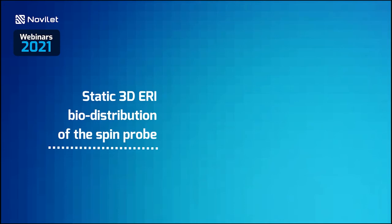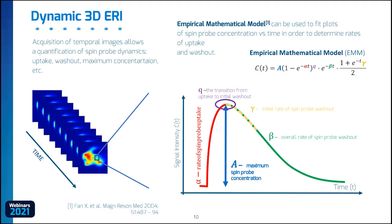Static images can provide very interesting information about spin probe bio-distribution. However, for in vivo studies, dynamic imaging is usually much more desirable. Thanks to the possibility of fast and repetitive imaging, it is possible to collect images with high temporal resolution that provide information about the temporal distribution of the spin probe in the body. This makes it possible to study the pharmacokinetics of the spin probe and conclude more about physiological processes. Dynamic imaging means repeating the imaging process in the shortest possible time and then tracking changes in EPR signal intensity for each voxel over time, generating signal intensity versus time curves. By fitting mathematical models, it is possible to obtain pharmacokinetic parameters. In our study, we used an empirical mathematical model that is often used in DCE-MRI studies.